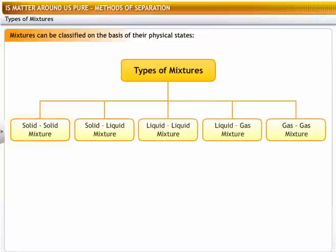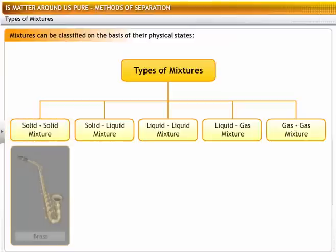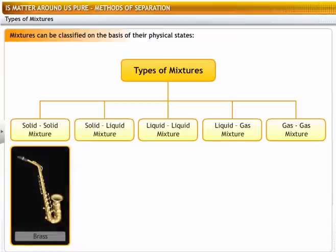Solid-solid mixture. Metal alloys are actually solutions of solids in solids. For example, brass is a solution of zinc in copper.